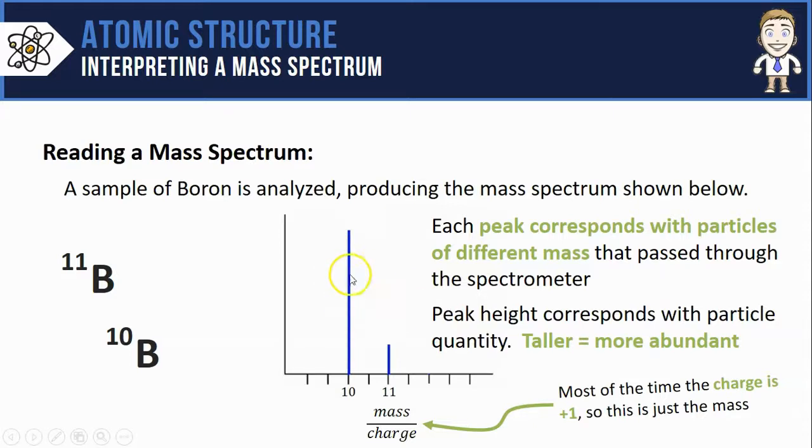So right away I can see that my boron-10 isotope must be more abundant or there was more of those in the sample than boron-11.